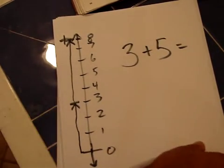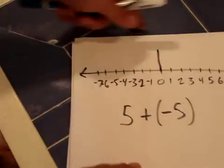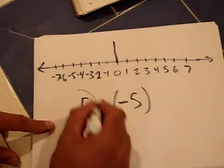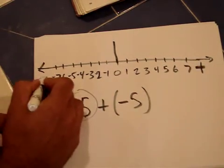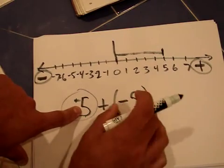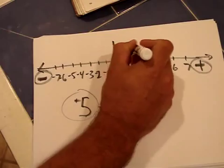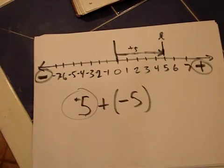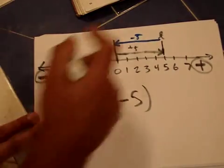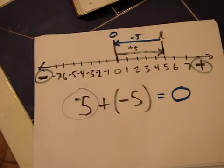Now here's an example of why a number plus its opposite gets you back to zero. Starting at 0, move 5 to the right — positive direction — landing at 5. Then move 5 to the left — the negative direction — 1, 2, 3, 4, 5, and I end up back at 0. This demonstrates the property of opposites: moving 5 right then 5 left returns you to zero. This can also be demonstrated on a vertical number line.